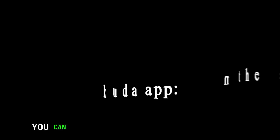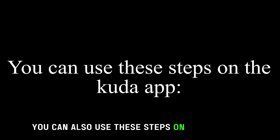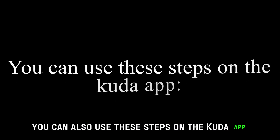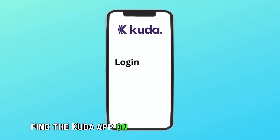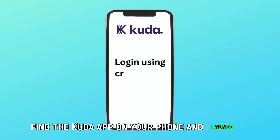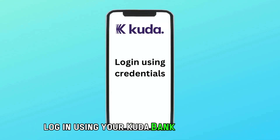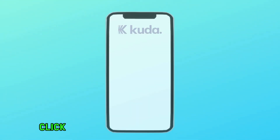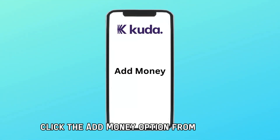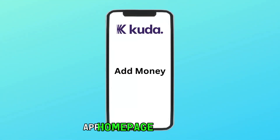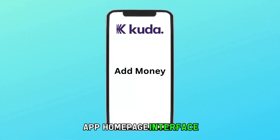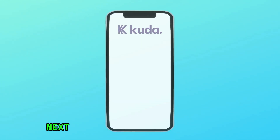You can also use these steps on the CUDA app. Find the CUDA app on your phone and launch it. Log in using your CUDA bank user details. Click the add money option from the CUDA app homepage interface. Next,